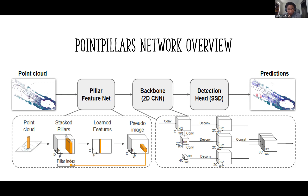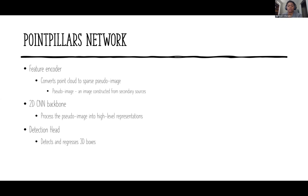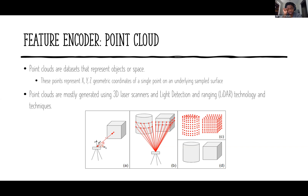The first part is the feature encoder, which converts the point cloud to a sparse pseudo image. A pseudo image is an image constructed from secondary sources. The 2D CNN backbone processes the pseudo image into high-level representations, and then the detection head detects and regresses the 3D boxes. Point clouds are datasets representing objects or space, where points represent XYZ geometric coordinates on an underlying sample surface, generated using 3D laser scanners or LiDAR.